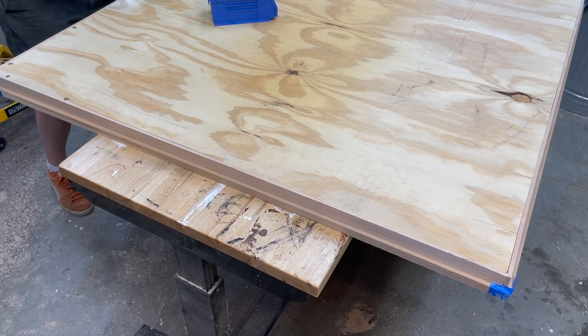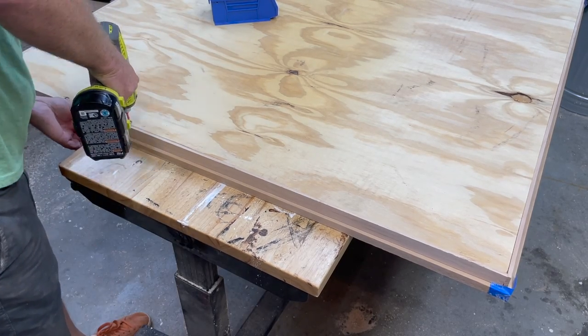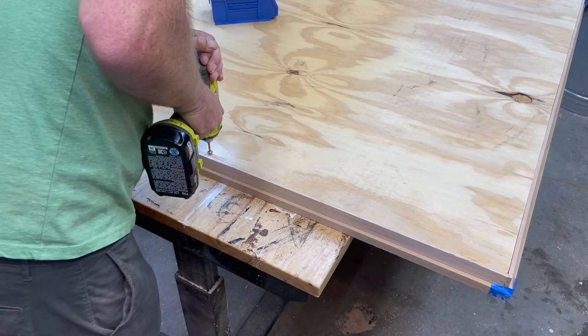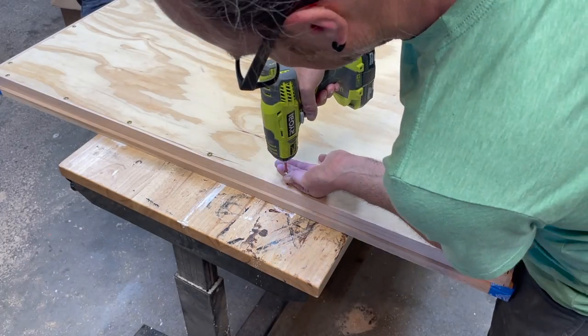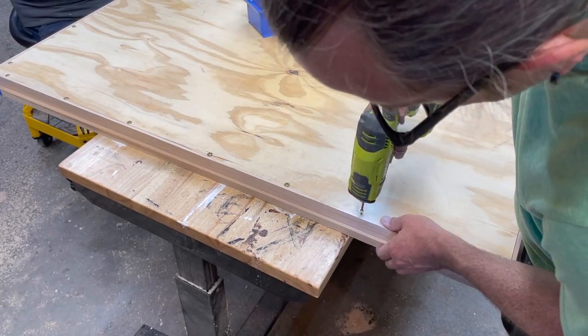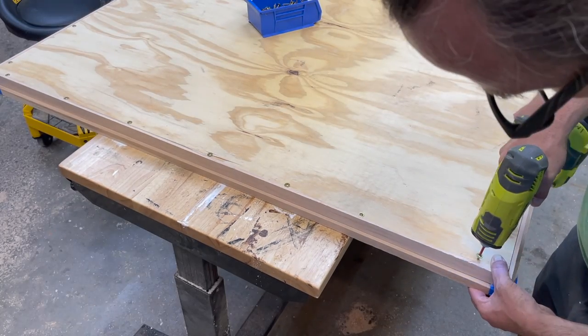The nice thing that this provides is that that top trim piece is not glued in anywhere, so we could actually unscrew that and replace those pieces if the chair were to ding up the wood around the edges and we wanted to replace that. Or if I wanted to refinish it or change out the color, I'd basically be able to remove them and put it back fairly easily.